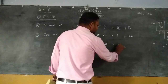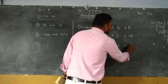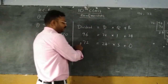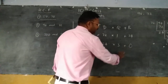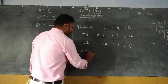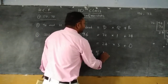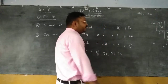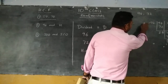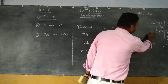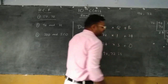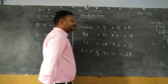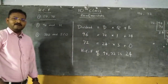In second step, write: dividend is 72, divisor is 24, quotient is 3, remainder is 0. In the second equation we got the remainder as 0. So what is the HCF of 96 and 72? In the 24 table we got the remainder as 0. So 24 is the HCF of 96 and 72.